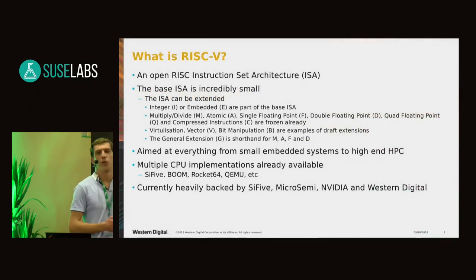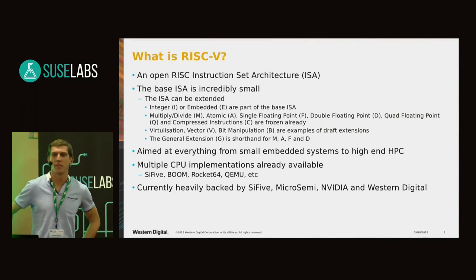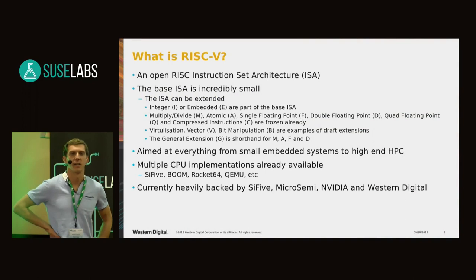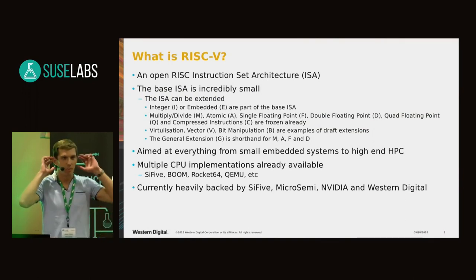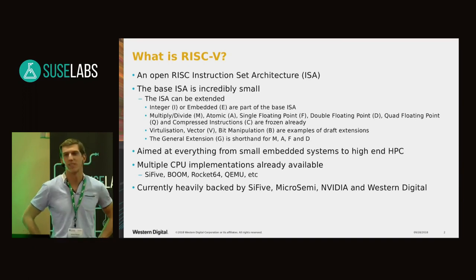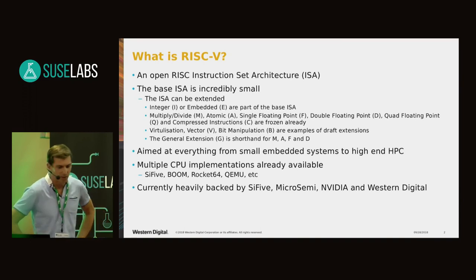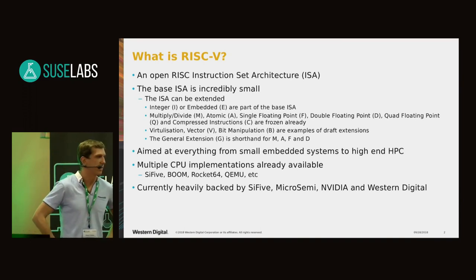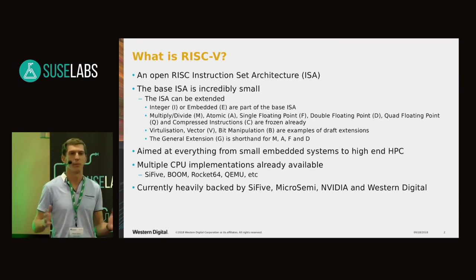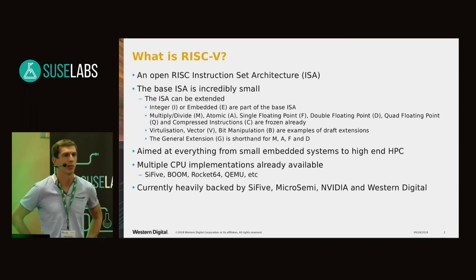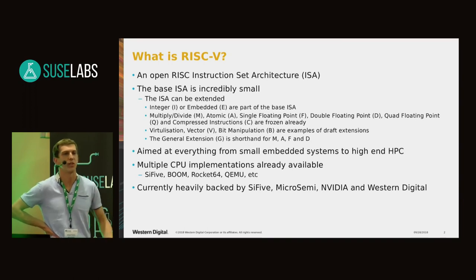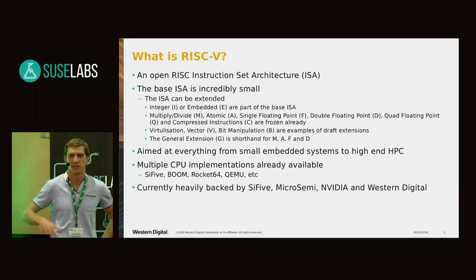For anyone who doesn't know, I'll quickly go over what RISC-V is. So it's not an open CPU — it's an open ISA. That's a big distinction that comes up; only the ISA is open. Obviously, it's a RISC ISA from the name. The ISA works with a very small base ISA, which can come in 32-bit, 64-bit, or theoretically 128-bit as well. Normally that'll have an I or an E — I is for integer, and E is for embedded, which is a slightly smaller version.